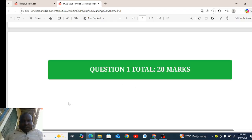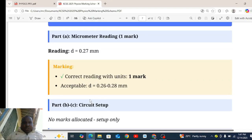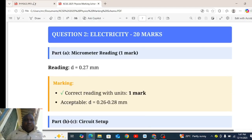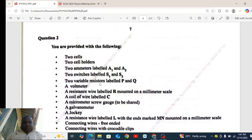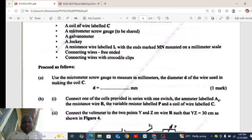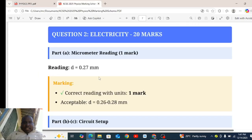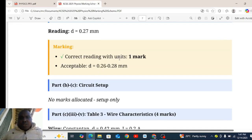Question 1 total marks 20. Question 2. Procedure for the procedure here. That length is d is 0.27 mm. Accept 0.26 to 0.28. Part C, BC.